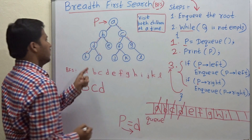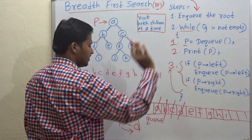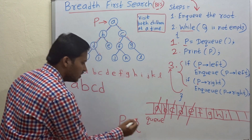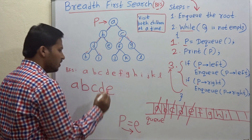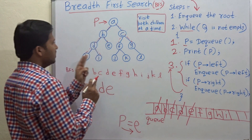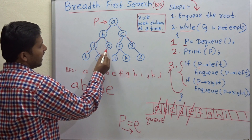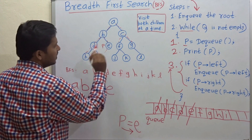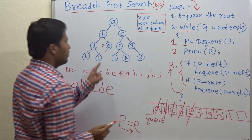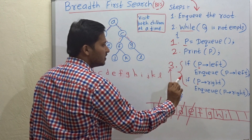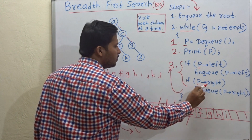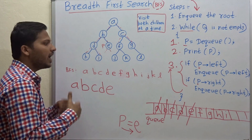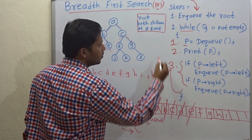After enqueuing H and I, next iteration: dequeue — the dequeued element is E. Print E. Then check for the two children of E. P is pointing to E and it does not have a left child, so that if condition is not satisfied. It also does not have a right child, so nothing to enqueue in this iteration.